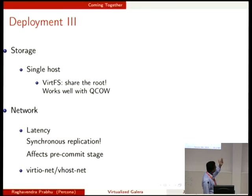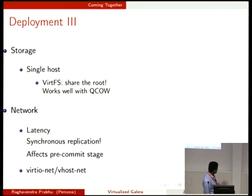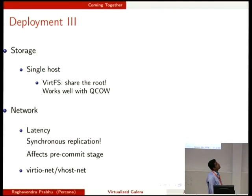Finally, the network. Latency is the core element in any synchronous replication and it can affect pre-commit stages and all that. It's very important to keep latency low in such an environment. Network latency can be high in virtualized environments, so there is a need to keep it as low as possible, as close to bare metal as possible. You can use virtio, which is para-virtualized networking, or vhost-net, which is not packaged by default but provides much higher performance — close to 90% of bare metal or even more. It's currently being developed.